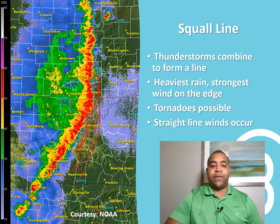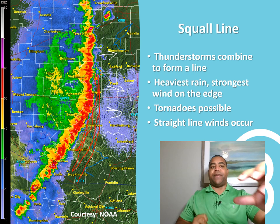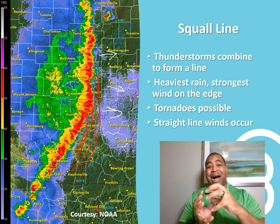With straight-line winds, instead of the wind moving in all different directions, it moves just like this in front. When you get a huge gust of wind moving in one particular direction, it can make things incredibly dangerous. With these thunderstorms, instead of acting individually, they actually combine and form a massive line — which is really cool to see.